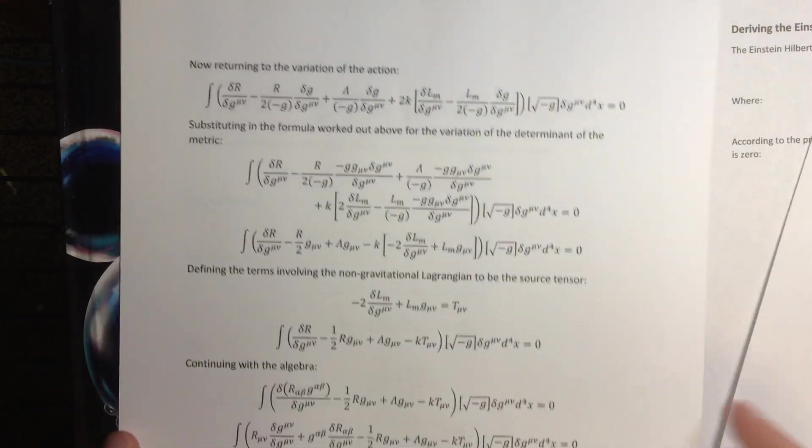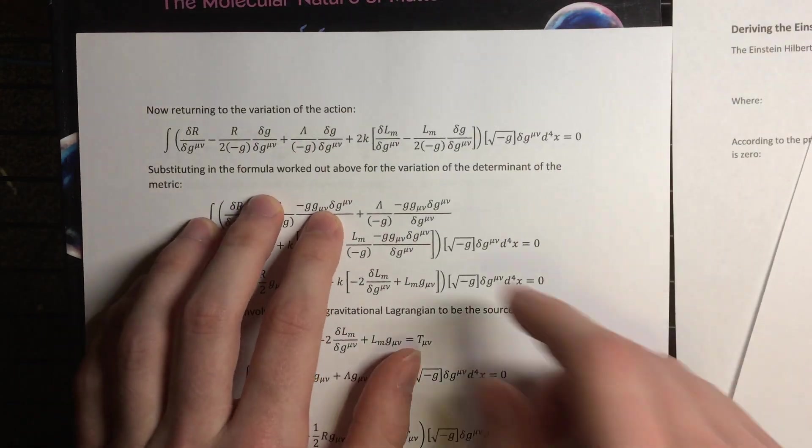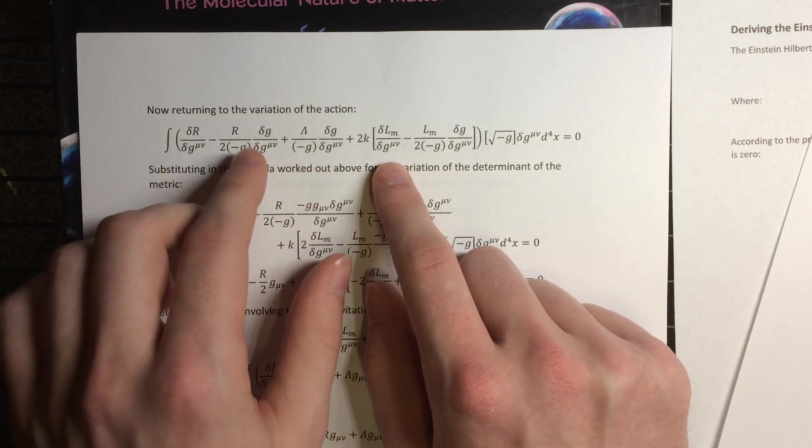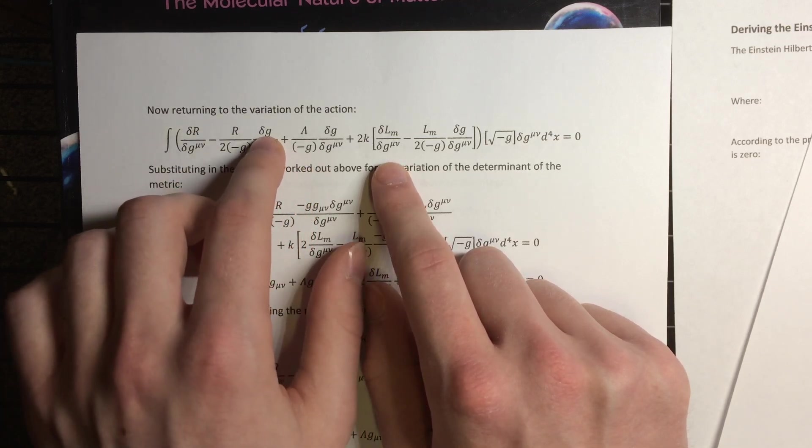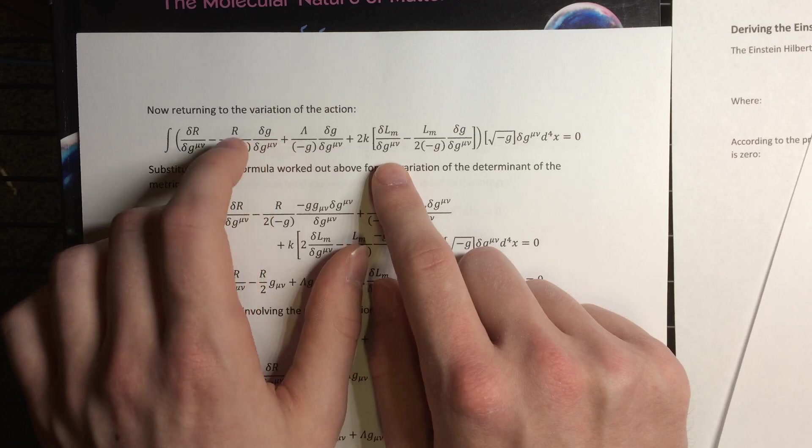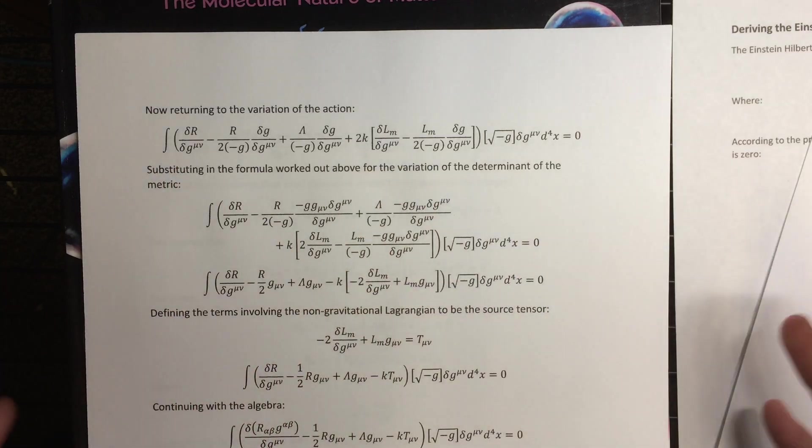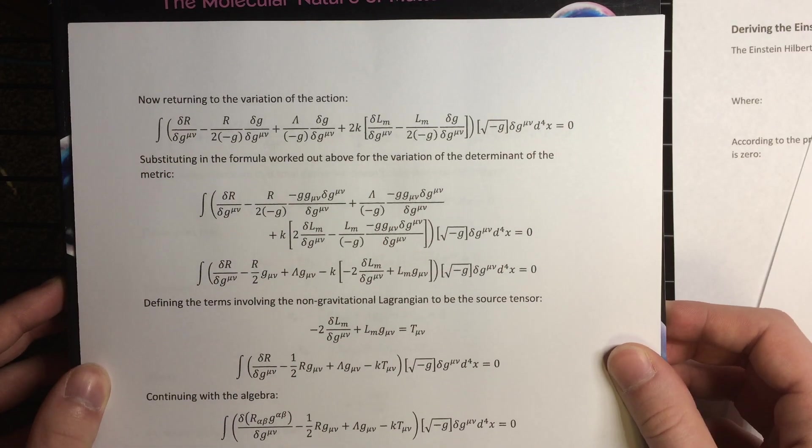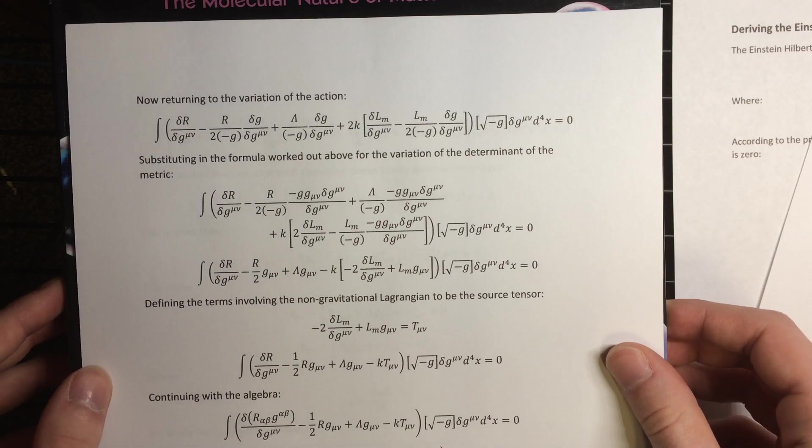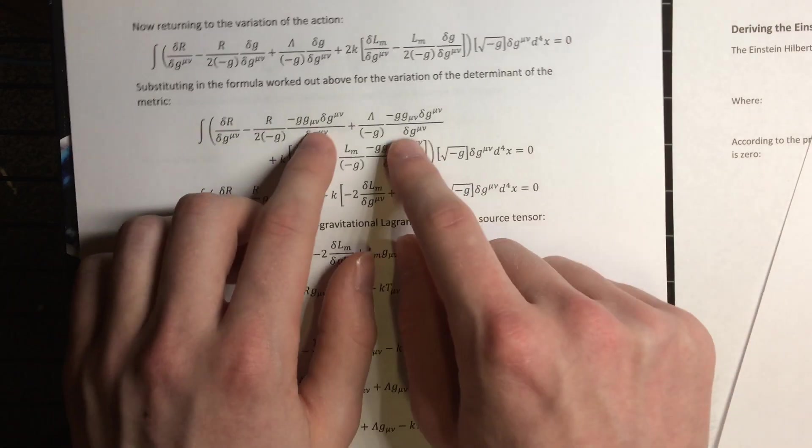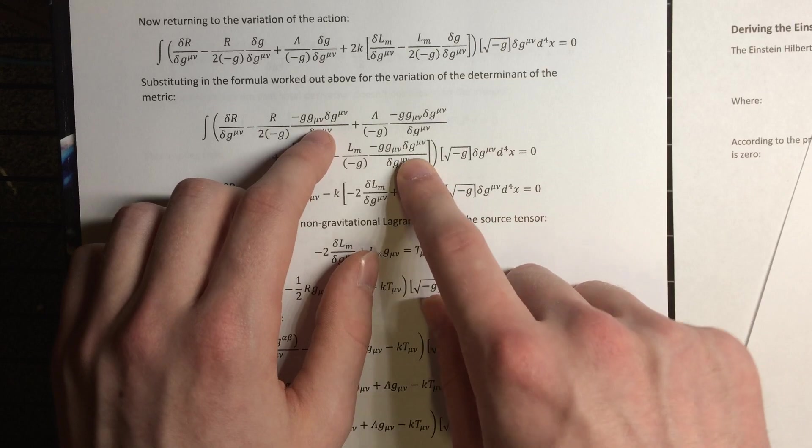So then, looking back at the variation as we left it, the variation of the Einstein-Hilbert action, we needed to calculate this variation in terms of something that contained a factor of the variation of the contravariant metric, and no other variations, just other numerical factors. And we've done that, so now substituting that identity in that we found right here, and then also there.